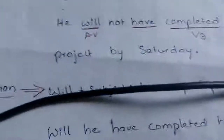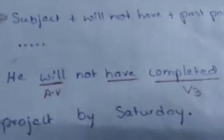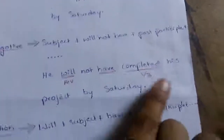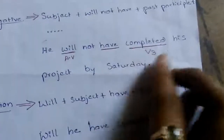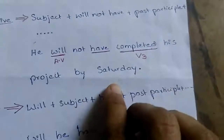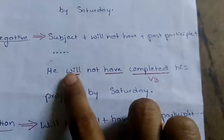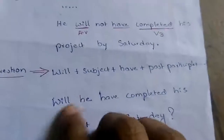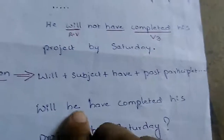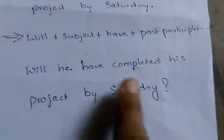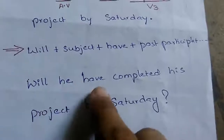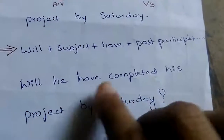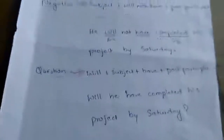To make it negative, after the helping verb 'will', we add 'not': 'He will not have completed his project by Saturday.' We add 'not' in between 'will' and 'have' to frame a negative statement. For the question form, we bring 'will' to the front of the sentence: 'Will he have completed his project by Saturday?' The order is: will, then subject, then have, then past participle, then the rest of the sentence.